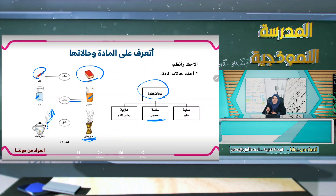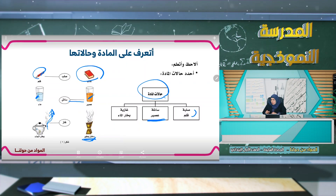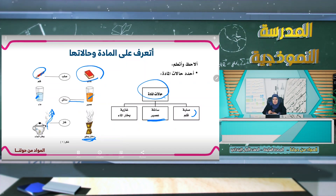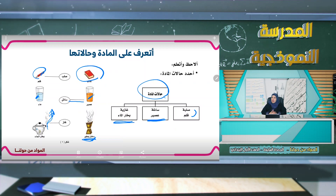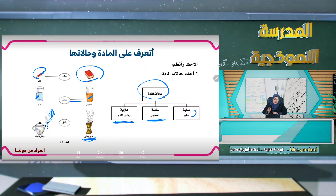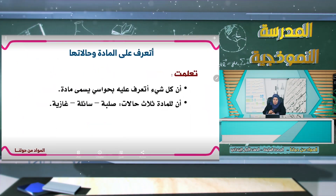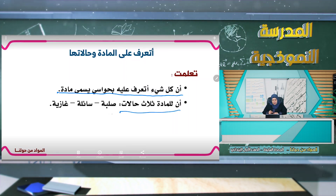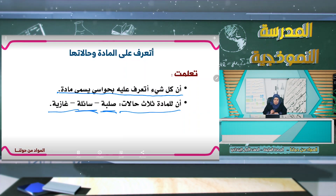حالات المادة: صلبة كالقلم والكتاب والدفتر والكرسي والشجرة، وسائلة كالعصير والماء والحليب الذي نحصل عليه من البقرة، والمواد الغازية كبخار الماء والعطور والبخور. كل شيء نتعرف عليه بحواسنا يسمى مادة، وللمادة ثلاث حالات: إما صلبة وإما سائلة وإما غازية.